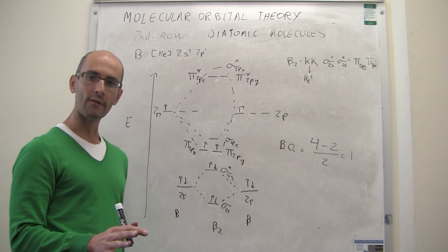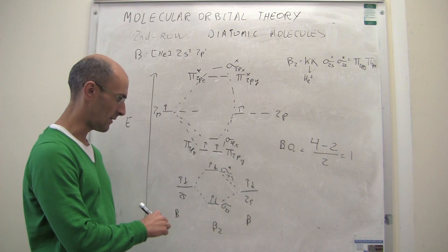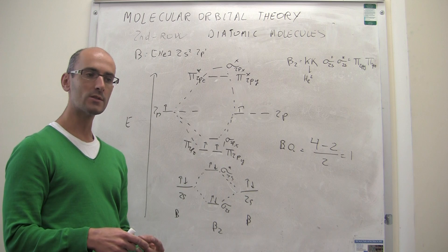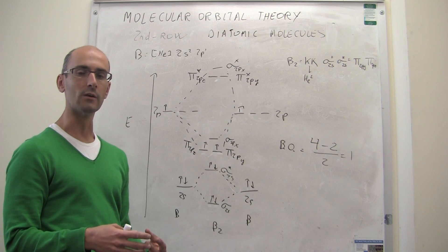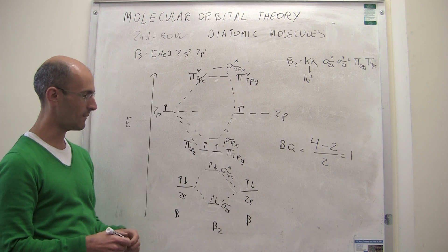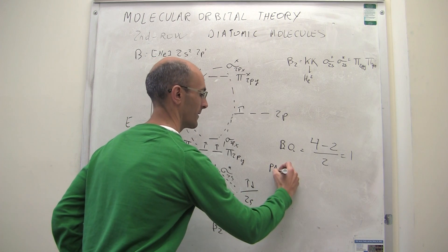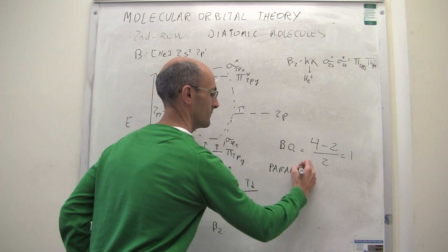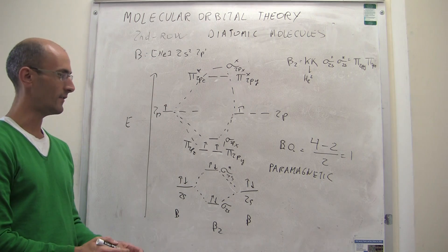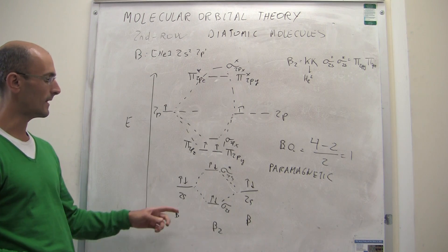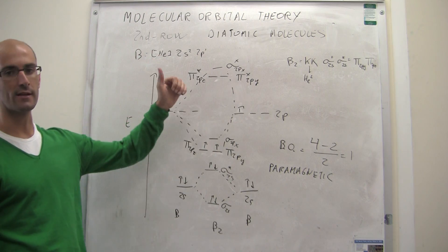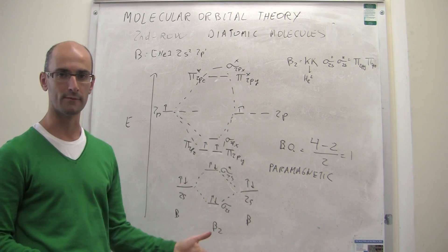All the molecules we have seen until now — up through beryllium-2 — have the same number of spins up as spins down; we call those molecules diamagnetic. But in this case, with two more spins up than down, we call that molecule paramagnetic. The rest of the lecture will continue down the periodic table, looking at carbon-2, nitrogen-2, oxygen-2, and fluorine-2.